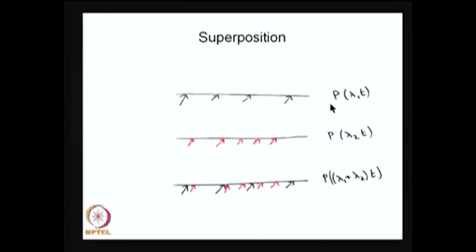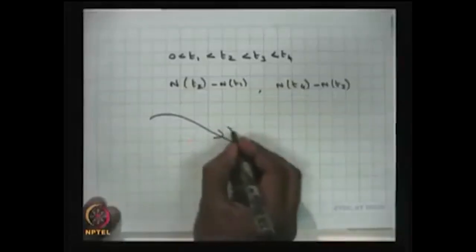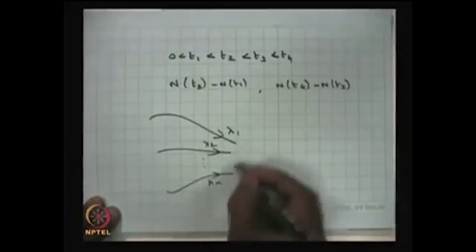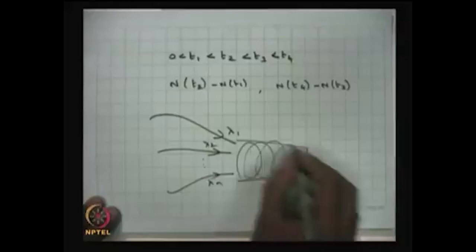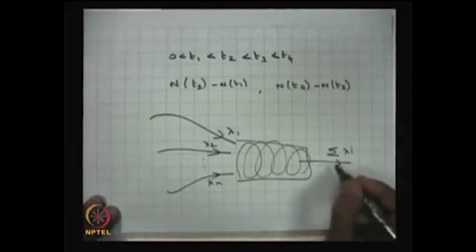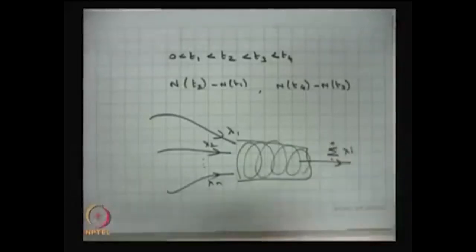Whenever you have two or more independent Poisson process arrivals, the merging or superposition will again be a Poisson process, as long as they are mutually independent, with the parameter being the sum of those individual parameters. You can combine many Poisson process streams into one stream, and that is going to be a Poisson stream with parameter equal to the sum lambda 1 through lambda n.